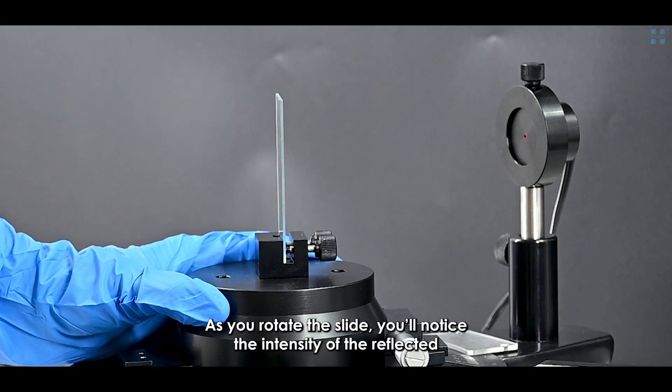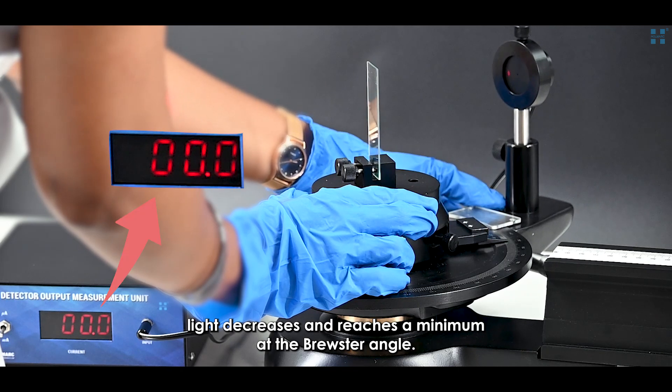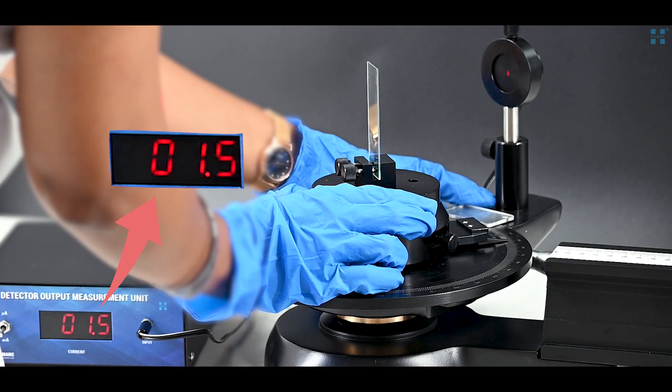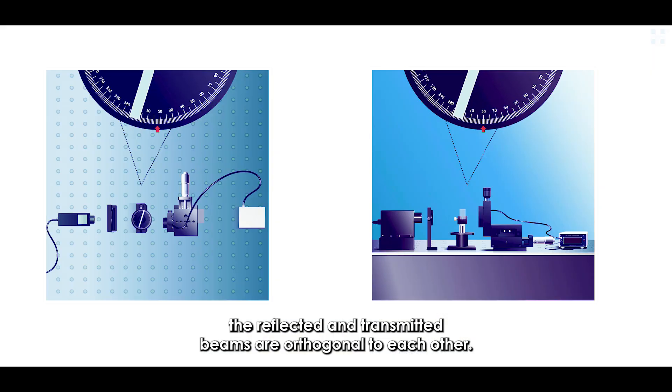As you rotate the slide, you'll notice the intensity of the reflected light decreases and reaches a minimum at the Brewster Angle. At this specific angle, the reflected and transmitted beams are orthogonal to each other.